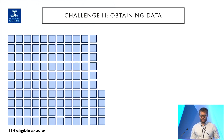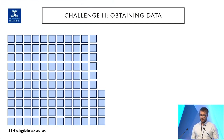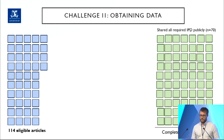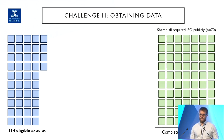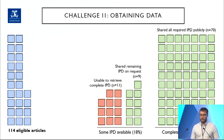In terms of obtaining data, after all our article screening we found about 114 studies were eligible for the review. When we looked at how many of these shared their data — studies that themselves looked at data and code sharing in medicine — we found that 70, or 61%, shared all of their data publicly. 18, or 20%, shared some data but not all we needed, and when we asked for it, we were able to get 9 out of 20 of what we needed.